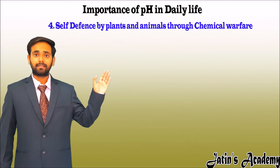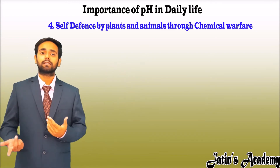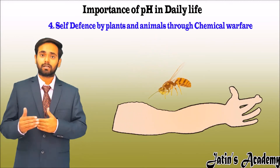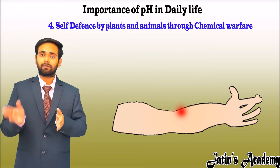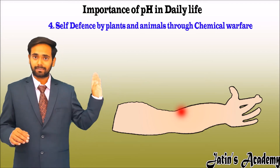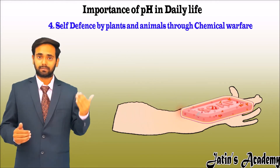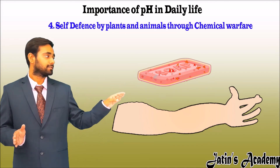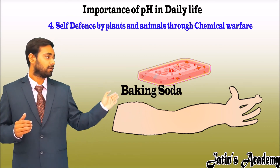Our fourth and last point is self-defense of plants and animals through chemical warfare. Some plants and animals contain acid in their sting. When we are stung by insects like honey bees or ants, acid is injected into that part of our skin, causing irritation. To neutralize the acid and get relief from pain, we apply a base — commonly baking soda or soap.